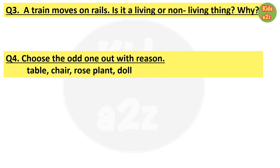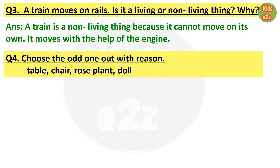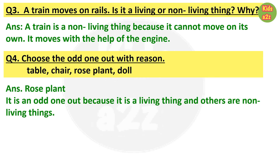Question 3: a train moves on rails — is it a living thing or a non-living thing and why? Answer: a train is a non-living thing because it cannot move on its own; it moves with the help of an engine. Question 4: choose the odd one out with reason. The odd one out is the rose plant, because it is a living thing and the others are non-living things. That's all for now, thanks for watching.